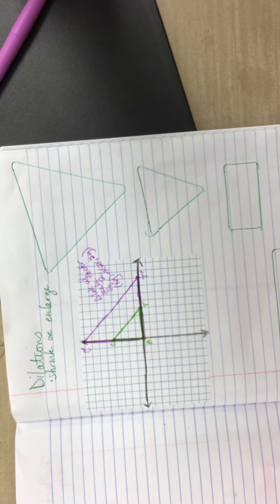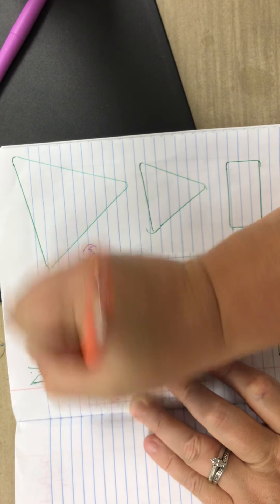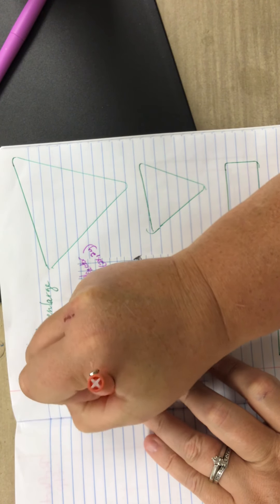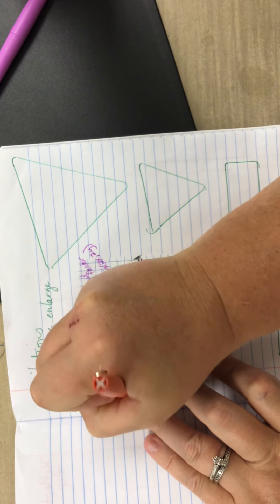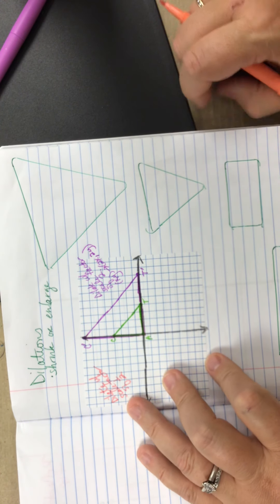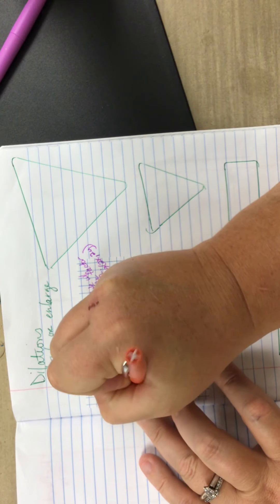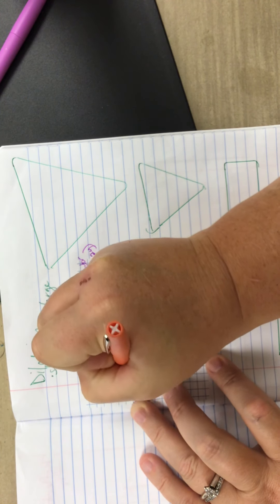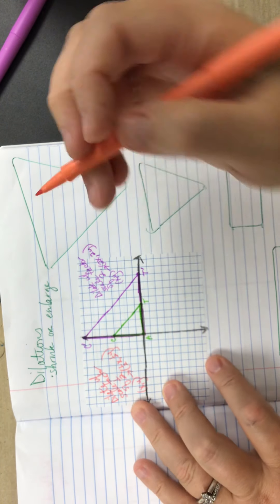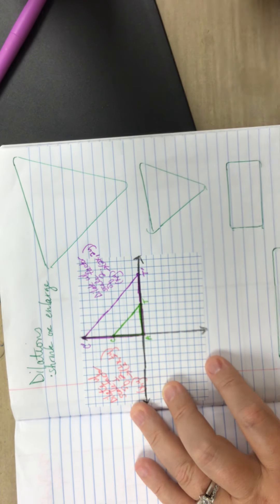So last but not least, let's do one that shrinks. So let's also do a dilation. We're going to dilate with a scale factor of a half because a half is going to tell me that it got smaller. So as a rule, if my ordered pair starts out as x, y, it's now going to move to a half x, a half y. So again, A was at 0, 0. A is not going to move because 0 times a half is still 0.